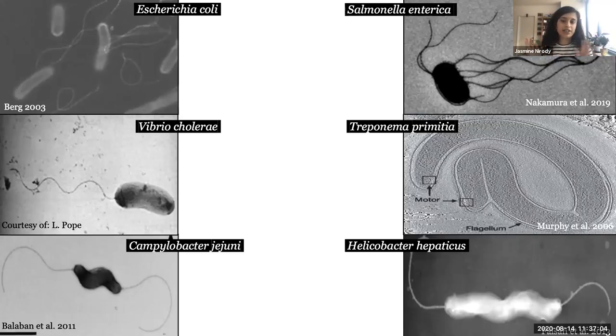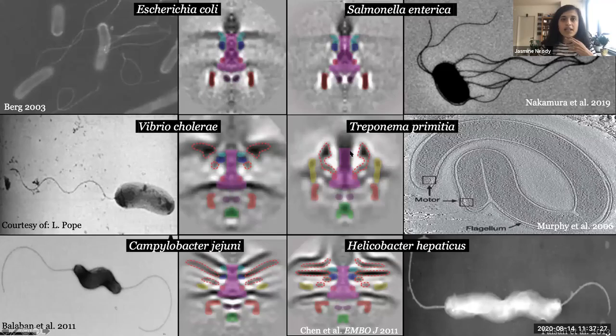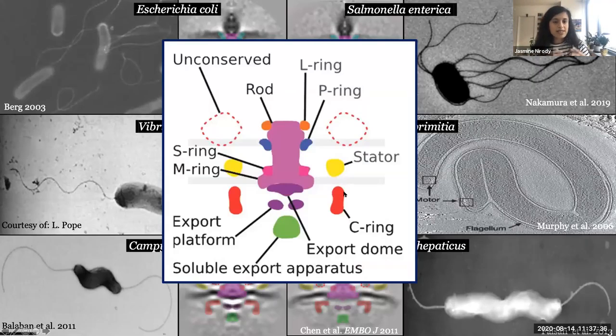Here I'm showing some uniflagellate species, some biflagellate species, some polyflagellates. These species don't just look very different from each other but they also live in a wide range of environments from the human gut to the deep sea hydrothermal vents, which I hear is pretty different from our intestines. What's actually surprising is that this diversity of organisms and the environments they live in are all driven by a nanomachine that has a strongly evolutionarily conserved core set of proteins.